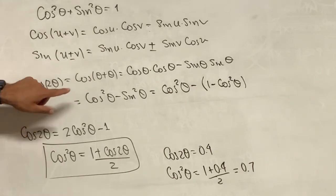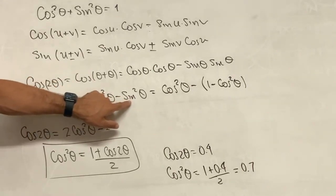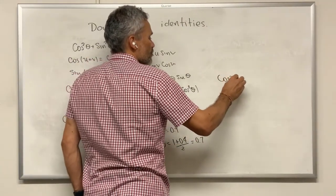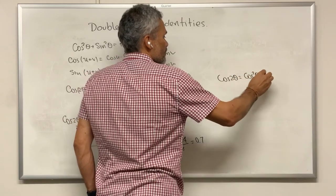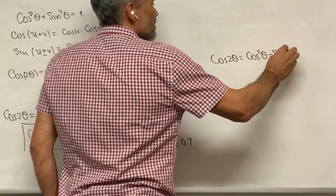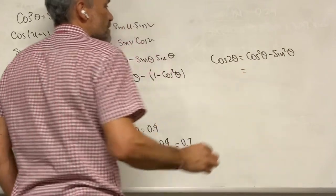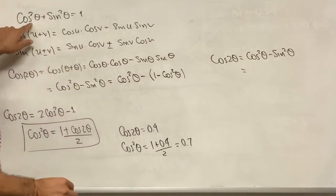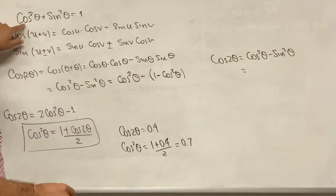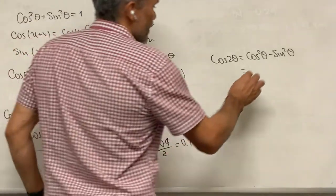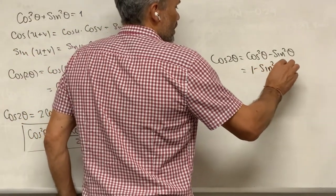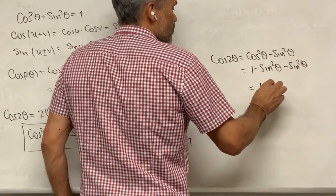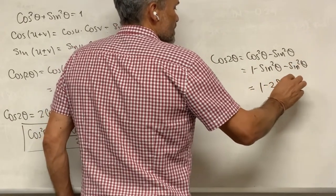This is if we decide to get rid of the sine squared of theta. We have cosine of 2 theta equal to cosine squared of theta minus sine squared of theta. And if we decide to write everything in terms of sine squared of theta, then we can use this identity and replace cosine squared of theta with 1 minus sine squared of theta, and then minus sine squared of theta.